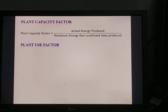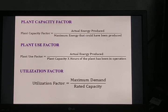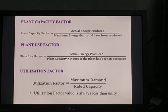Plant use factor is defined as the ratio of actual energy produced to the product of plant capacity and the number of hours for which the plant was in operation. Utilization factor is defined as the ratio of maximum demand to the rated capacity of the power plant, and its value is always less than unity. For example, with a demand of 350 megawatt and a plant capacity of 470 megawatt, the utilization factor is 350 divided by 470, which equals 0.740 — always less than unity.